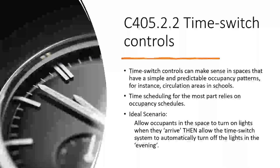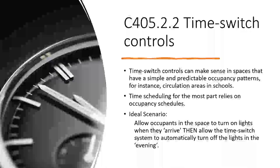Time scheduling for the most part relies on occupancy schedules. One reason it's becoming less efficient is because buildings are becoming more diverse with multiple uses and space types, making occupancy patterns harder to predict — and we can't easily set all those schedules. Buildings are also renovated over time, changing their space types. The ideal scenario is that lights turn on when occupants arrive and are set to an evening time to turn off automatically when everyone leaves. The problem is you can't forget about janitorial, maintenance, and other personnel who operate before everyone gets in and after everyone goes home. Operating hours are actually longer, but we can reduce and only light the parts that are needed.